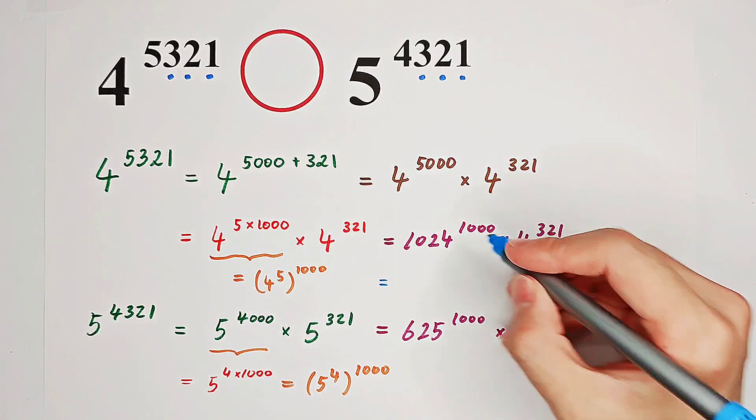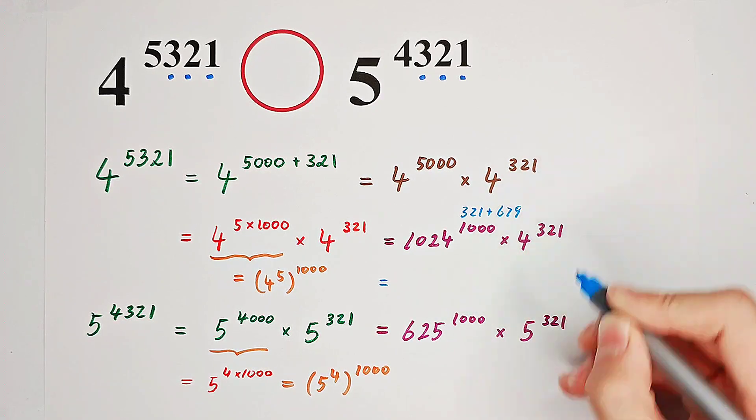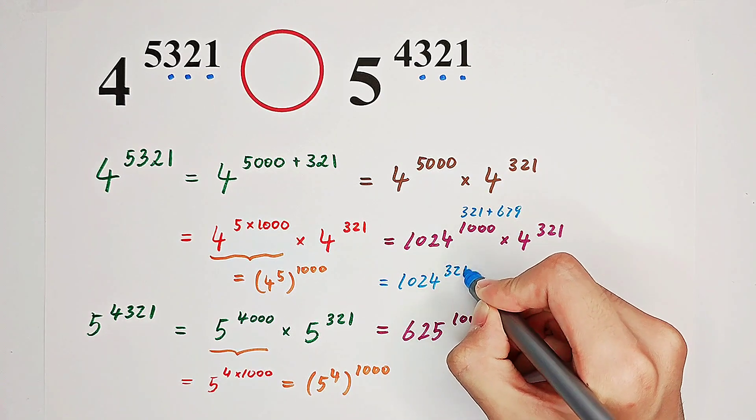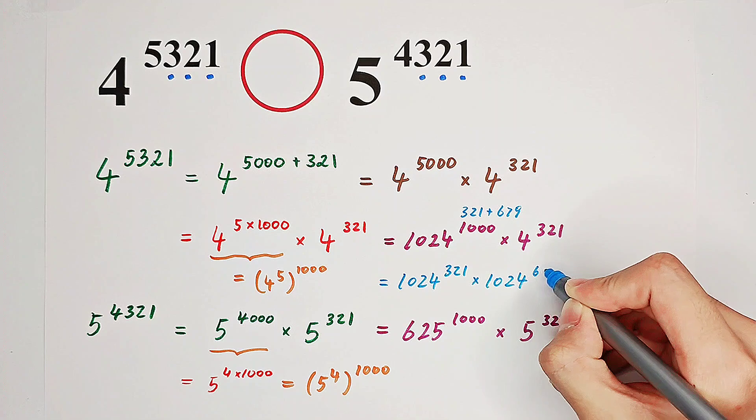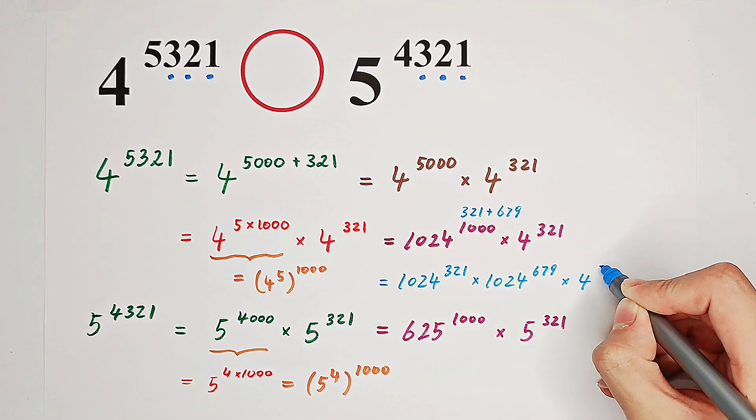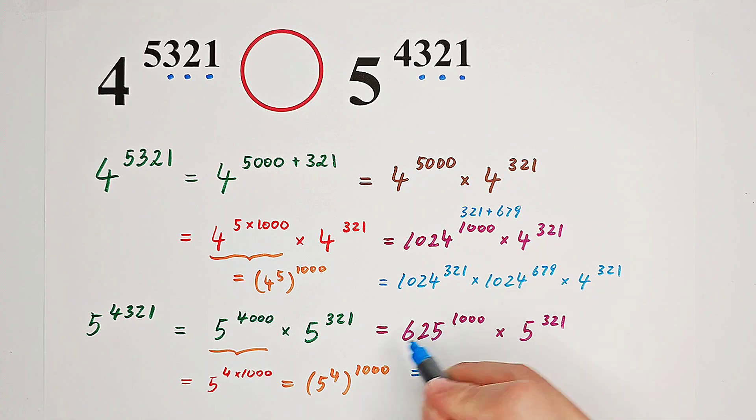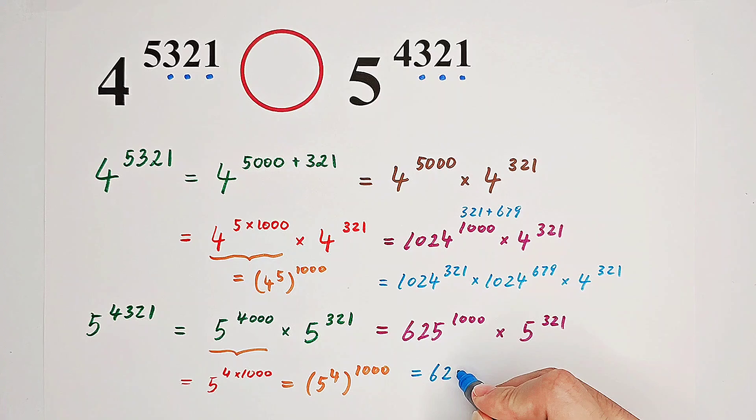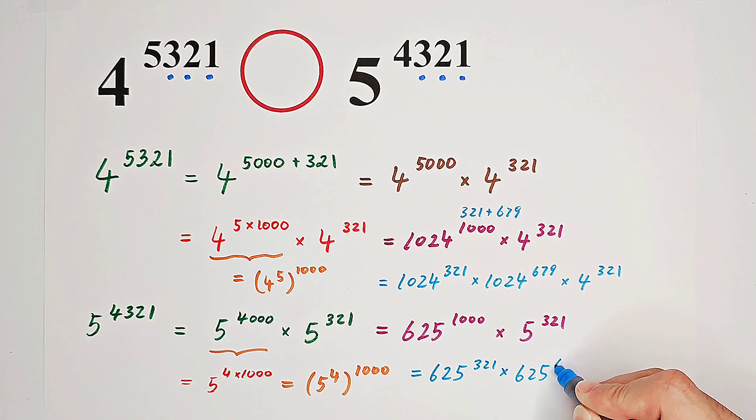This 1,000 can be written as 321 plus 679. So it's going to be 1,024 to the power of 321 times 1,024 to the power of 679, then times 4 to the power of 321. And for this term, we'll do the same thing.